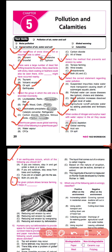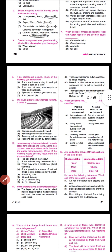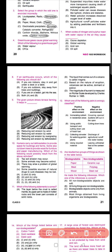Question number nine shows a picture of terrace farming and asks how it helps. The correct answer is option B: terrace farming slows down the speed of flowing water and thus reduces soil erosion by water.